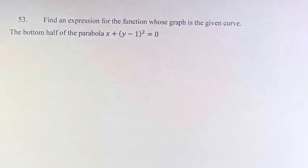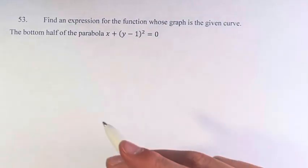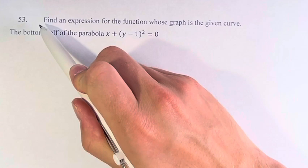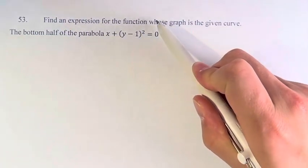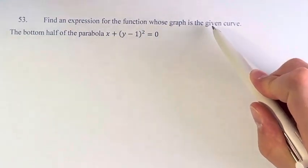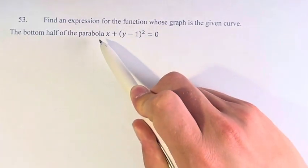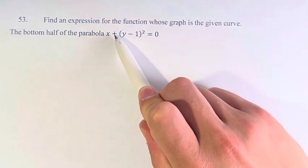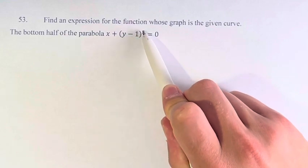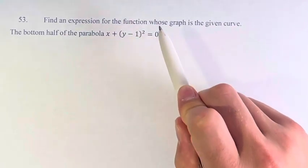Hello, and welcome back to another video. In this problem, we're asked to find an expression for the function whose graph is the given curve — the bottom half of the parabola x plus y minus 1 squared is equal to 0.